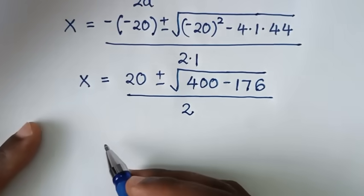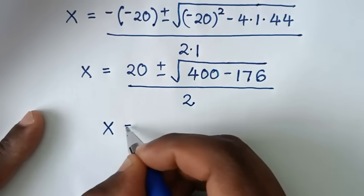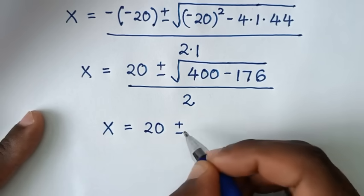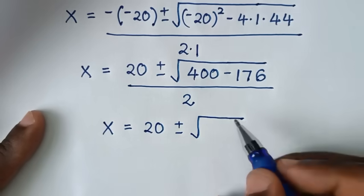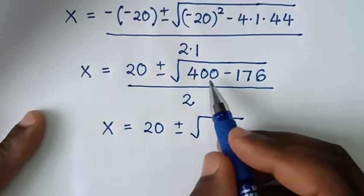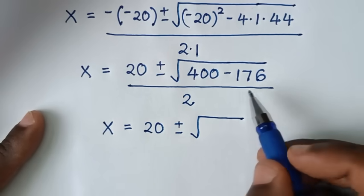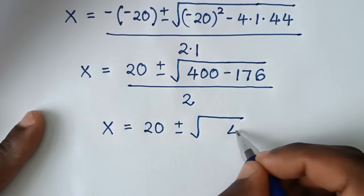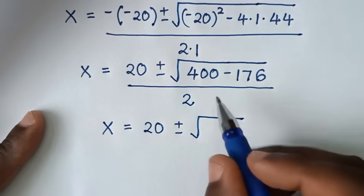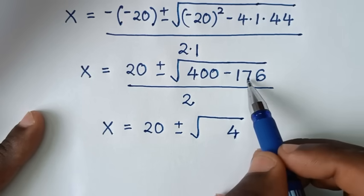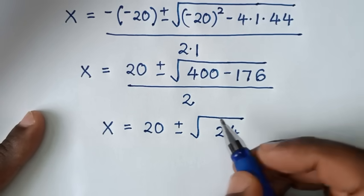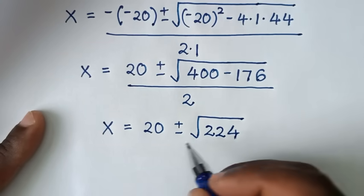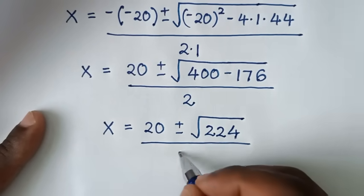Simplifying inside the square root: 400 minus 176 equals 224. So we have x equals 20 plus or minus square root of 224, over 2.